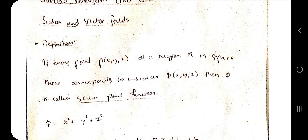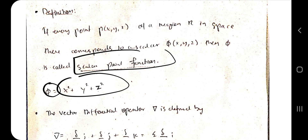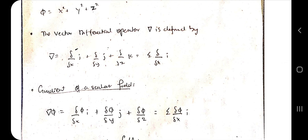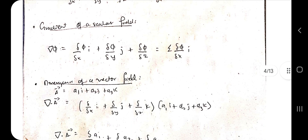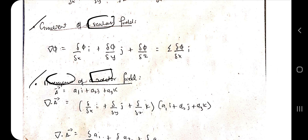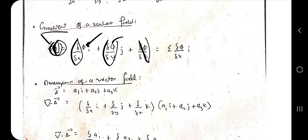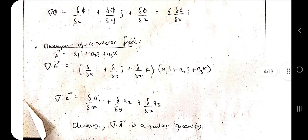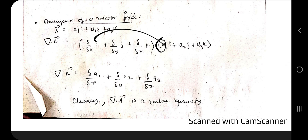Moving on to gradient, divergence, and curl. A scalar function has no direction — it contains only x, y, z, for example φ = x² + y² + z². A vector function includes i, j, k components. The del operator has components ∂/∂x, ∂/∂y, ∂/∂z for i, j, k respectively. The gradient of φ applies del to φ, giving ∂φ/∂x i + ∂φ/∂y j + ∂φ/∂z k. Divergence of vector field a = a₁i + a₂j + a₃k is ∂a₁/∂x + ∂a₂/∂y + ∂a₃/∂z.